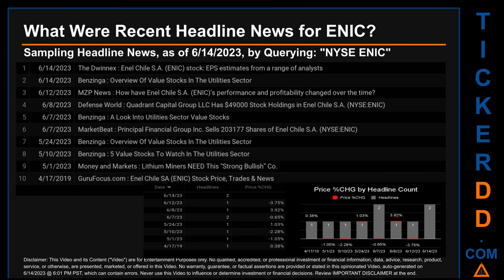What were recent headline news for ENIC? Today, Wednesday, June 14, 2023, I sampled one of our news aggregators for latest headlines for this ticker by searching specifically by a keyword that may appear broadly in the title or body of discoverable news articles. The keyword I used was a combination of the exchange and the ticker symbol: NYSE ENIC. The results show 10 unique headlines published across 8 unique dates. Publication dates spanned 15 to 19 days. The latest publication was actually today, Wednesday, June 14, 2023, when there were two found headlines.